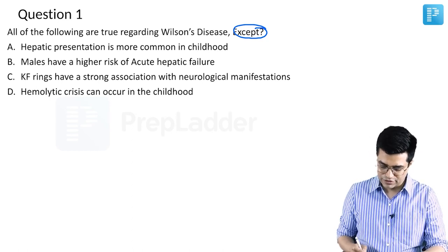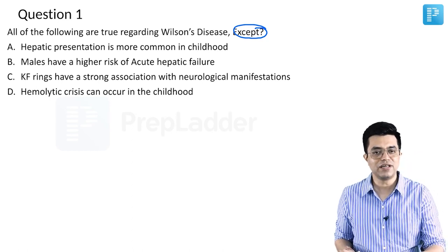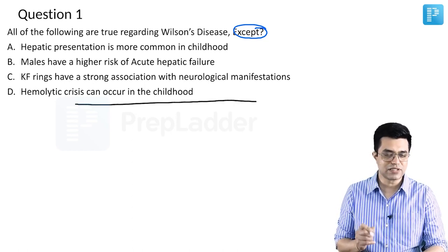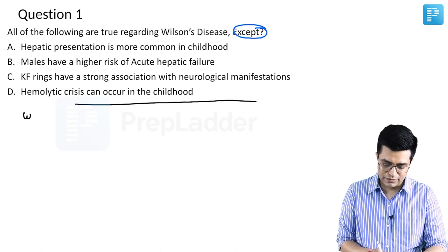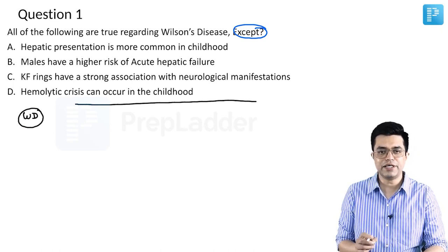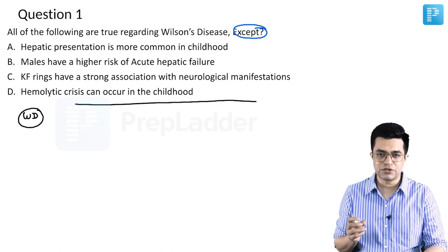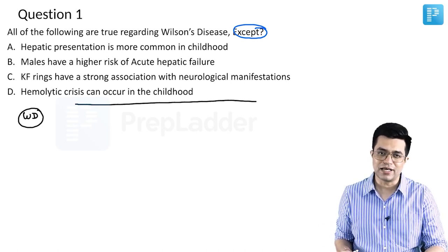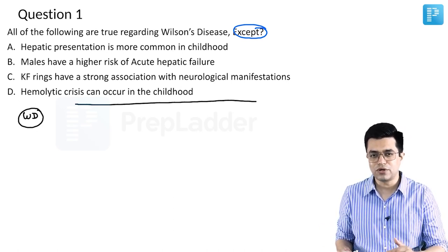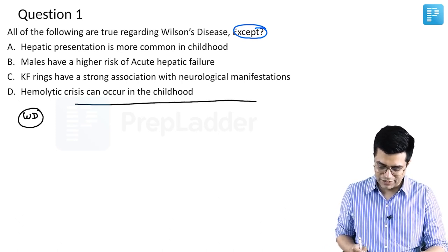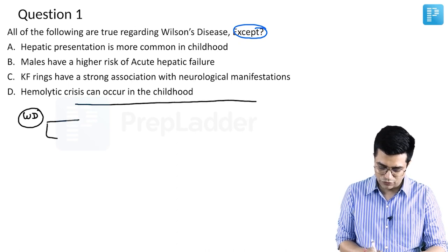This question is related to the clinical presentation of Wilson's disease. Wilson's disease was previously known as hepatolenticular degeneration, because there is involvement — due to copper deposition damage to hepatocytes, that is the liver, as well as the basal ganglia of the brain. So there are neurological manifestations as well as hepatic manifestations. The manifestations can be divided into four to five different categories.